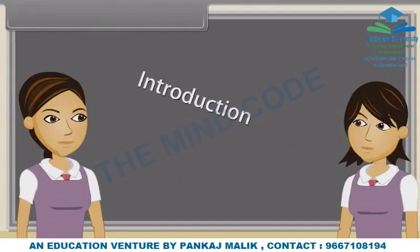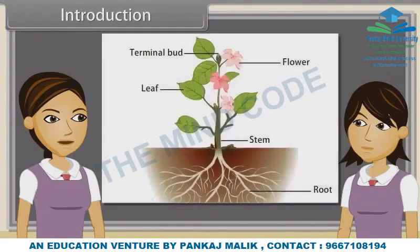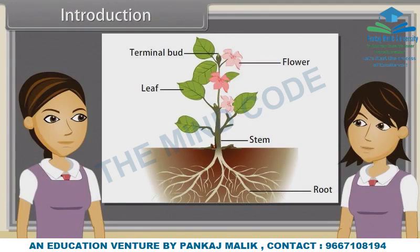When we observe a plant, we see that every plant has roots, stem and leaves. Plants also have flowers and roots. We have already discussed characteristics, types, modifications and functions of roots, stems, leaf and inflorescence. Now we will study flowers.